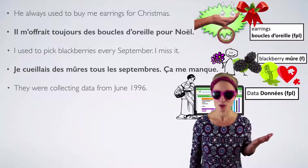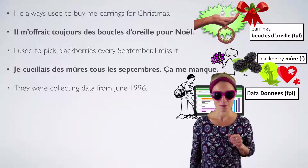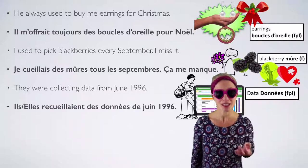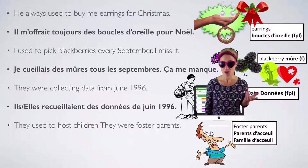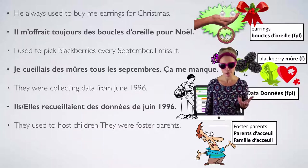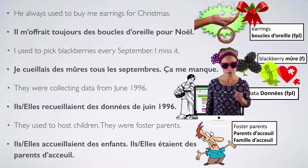'They were collecting data from June 1996.' Data is 'données' — the givens, les données. Ils ou elles recueillaient des données de juin 1996. 'They used to host children — they were foster parents.' For foster parents you could say 'parents d'accueil' or 'famille d'accueil.' Ils ou elles accueillaient des enfants. Ils ou elles étaient une famille d'accueil.